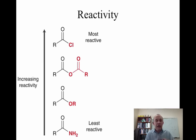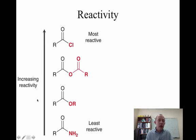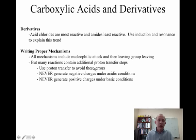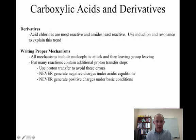To summarize: acid chlorides are the most reactive, then anhydrides, then esters — amides are the least reactive carboxylic acid derivatives. We'll talk about how we interconvert these and the reactions they undergo in future videos. Make sure you know the different carboxylic acid derivatives and keep these rules for writing proper mechanisms in mind. All mechanisms are going to include nucleophilic attack and leaving group leaving, but most reactions also contain proton transfer steps. Never generate negative charges under acidic conditions; never generate positive charges under basic conditions.